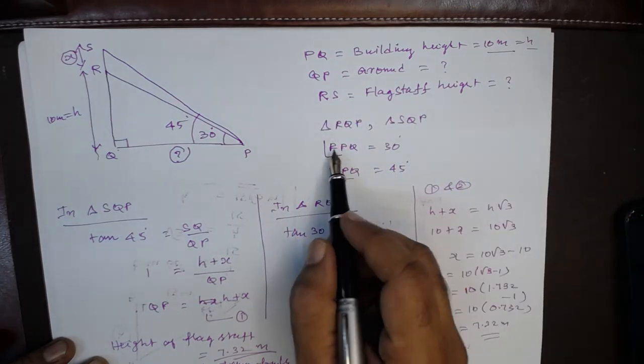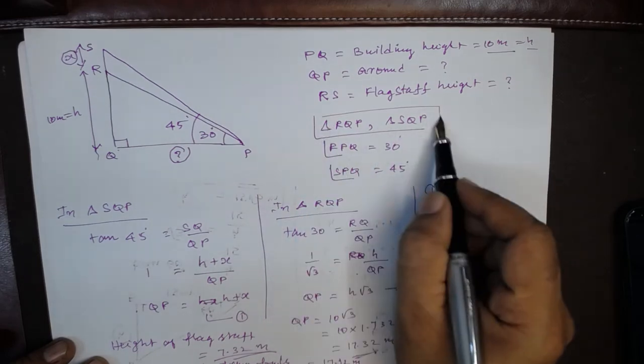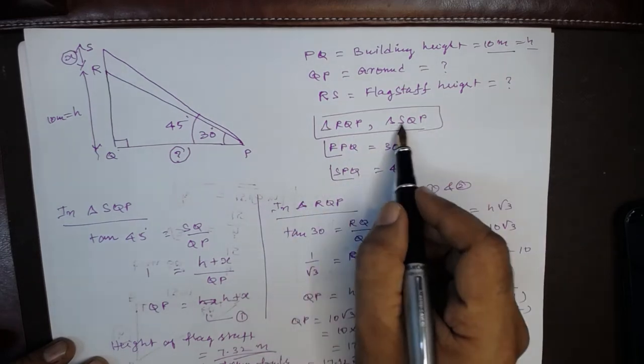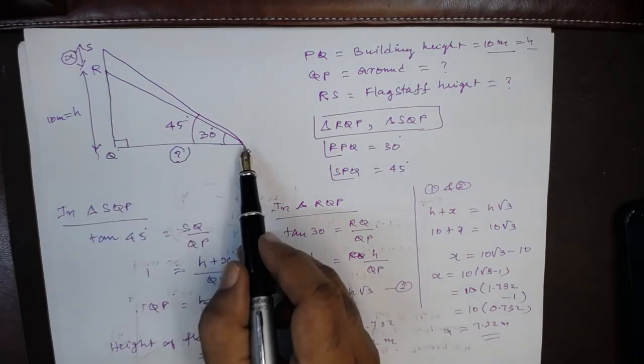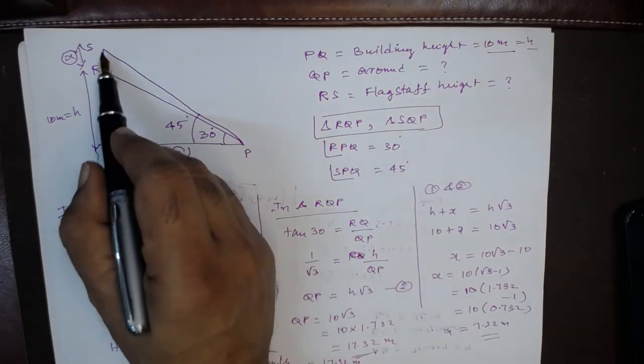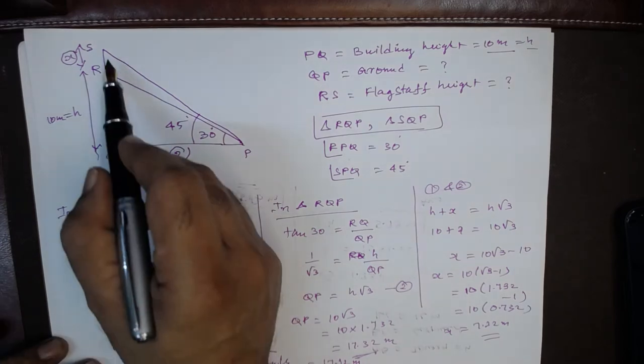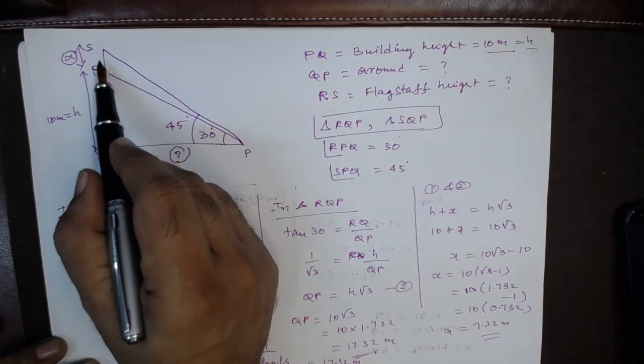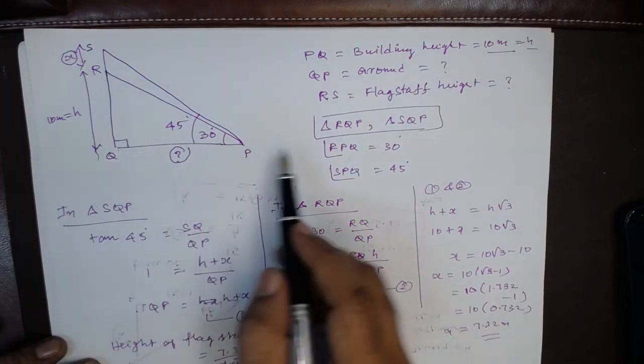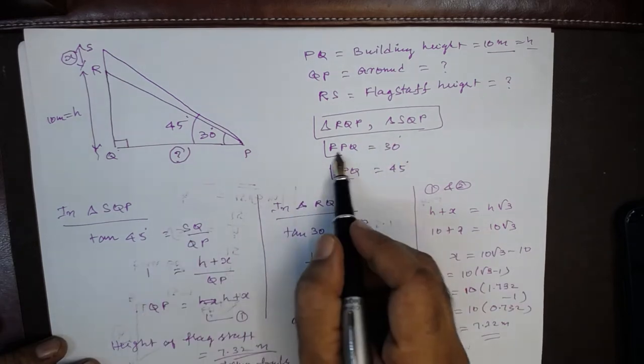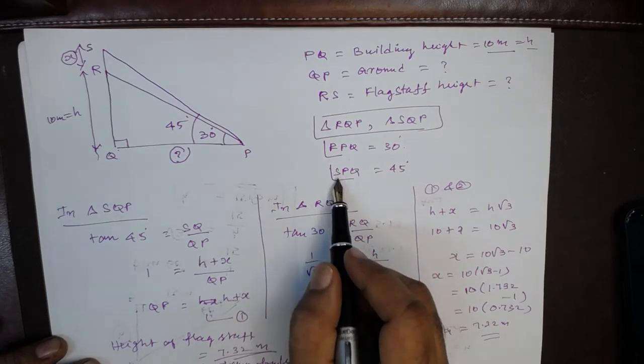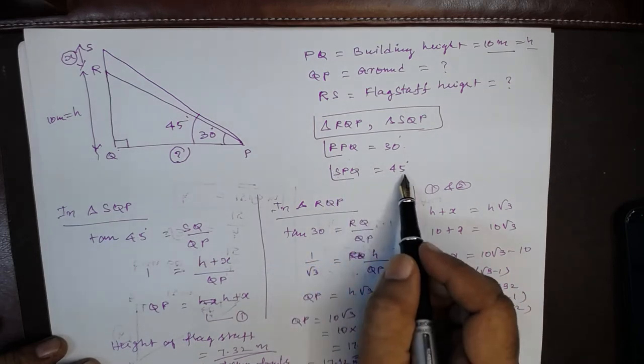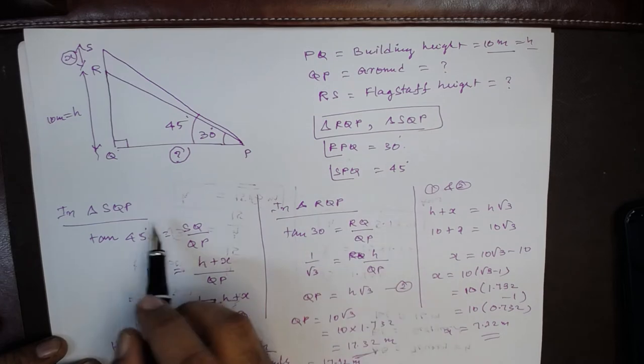So we have two right triangles: RQP and SQP. RQP based on the building, SQP based on the flagstaff and the building. And the angle RPQ is 30 degrees of elevation. Angle of elevation of the stop is 45 degrees from the ground, that is from P.